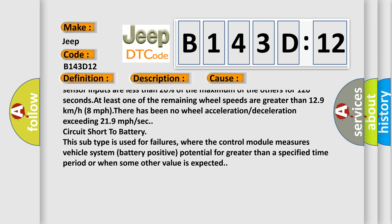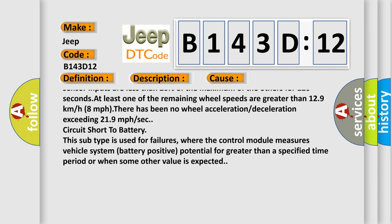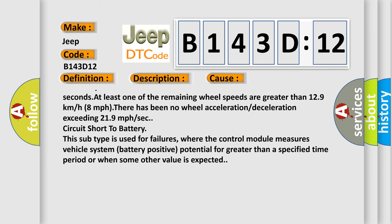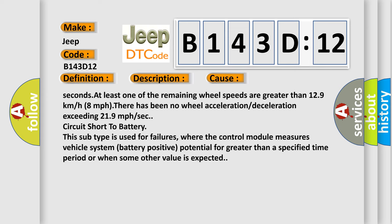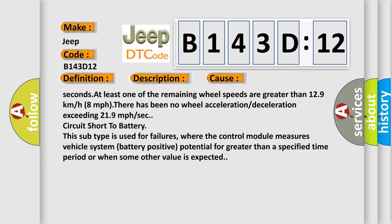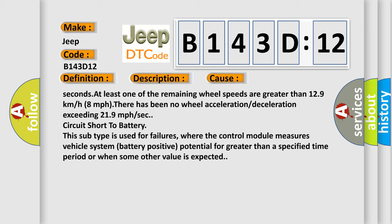Circuit short to battery. This subtype is used for failures where the control module measures vehicle system battery positive potential for greater than a specified time period or when some other value is expected.